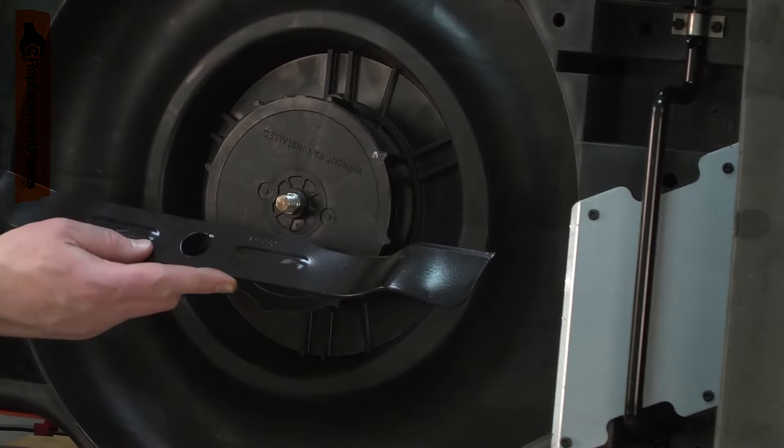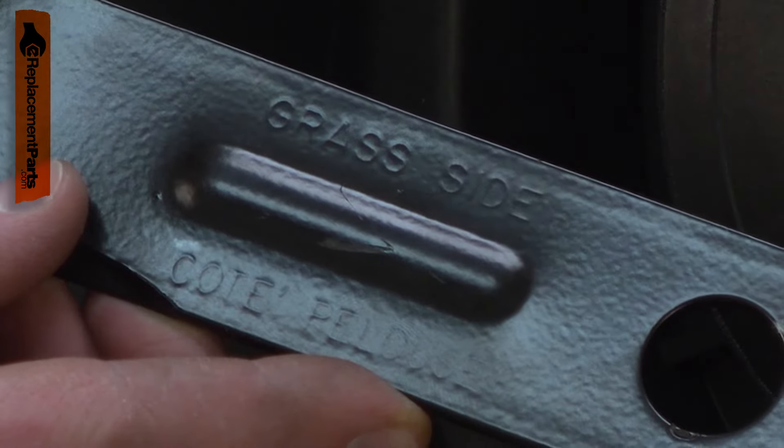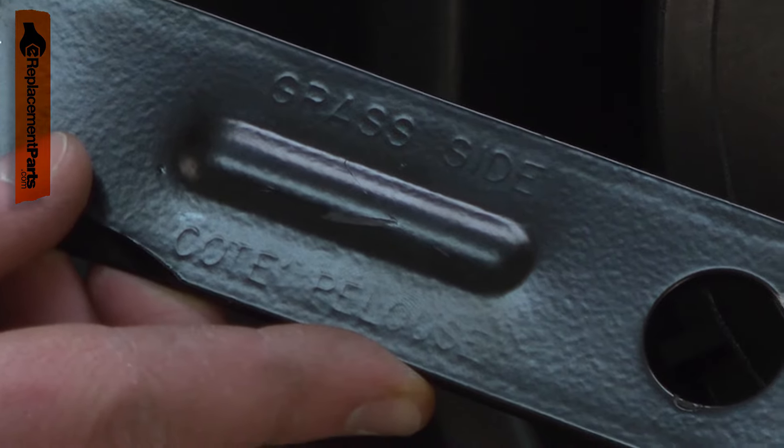Now I can install the new blade. You want to make sure that you have it pointed the right direction. You'll notice on the blade, it says grass side. This side of the blade should be towards the grass.